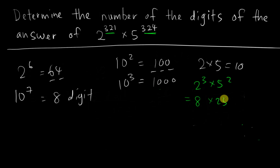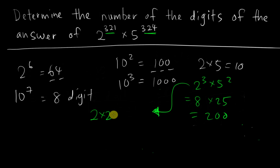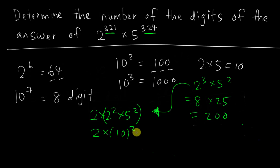For example, 2 to the power of 3 is 8 and 5 squared is 25, so the answer is 200. Index laws tell us that if they have the same power, we can join them together and multiply directly. So for 2 to the power of 3, we can split it as 2 multiplied by 2 squared, then multiply by 5 squared. Since 2 squared and 5 squared have the same power, we get 10 squared, giving 2 × 100 = 200 — the same answer.